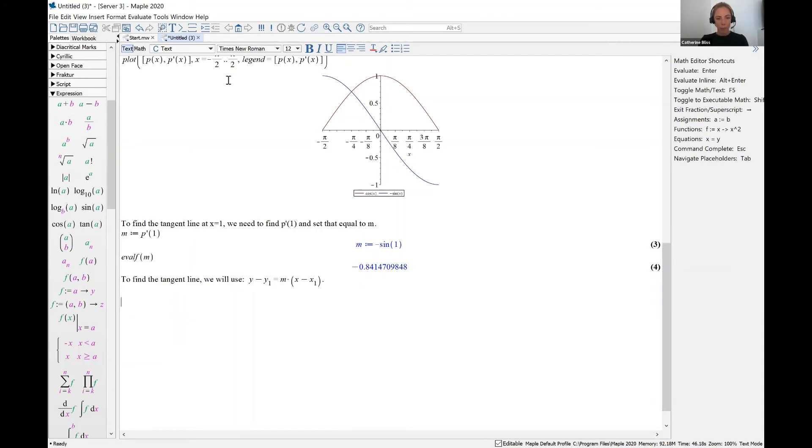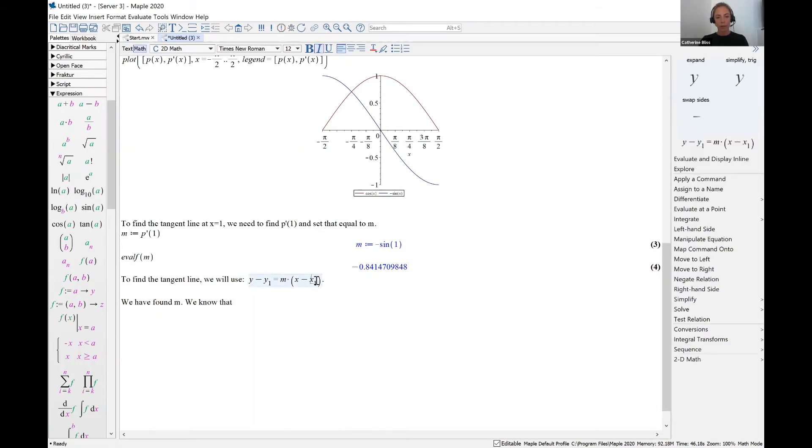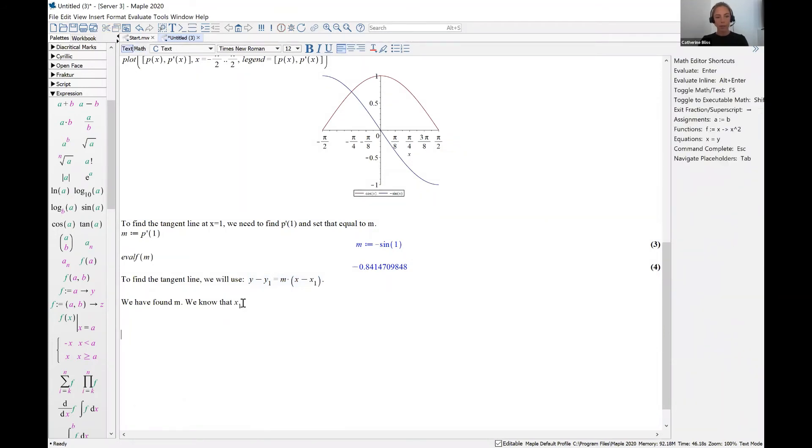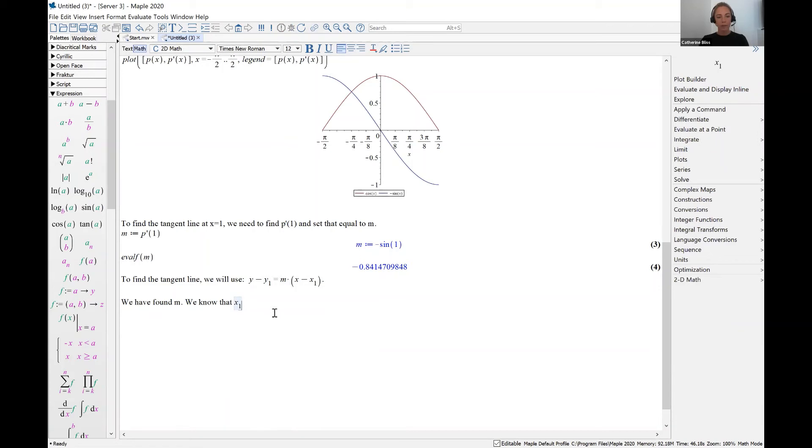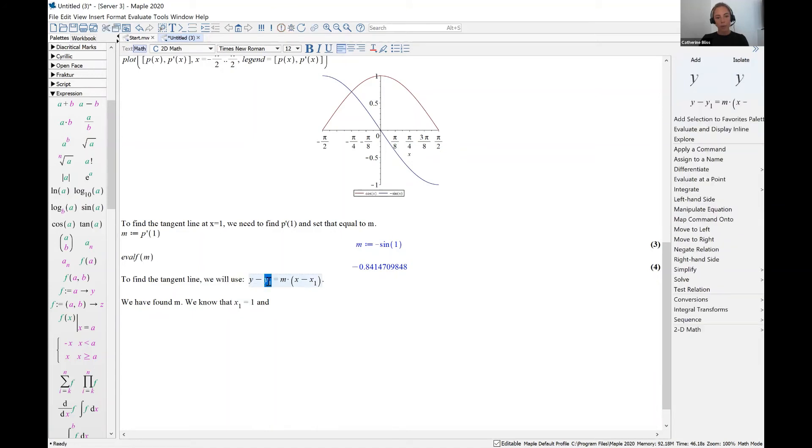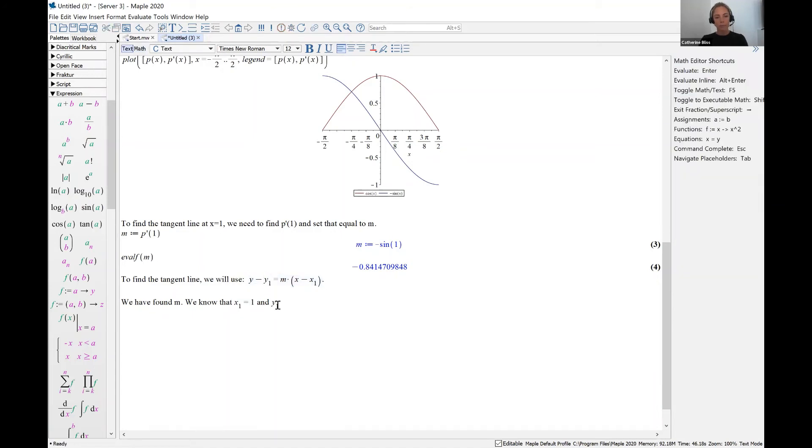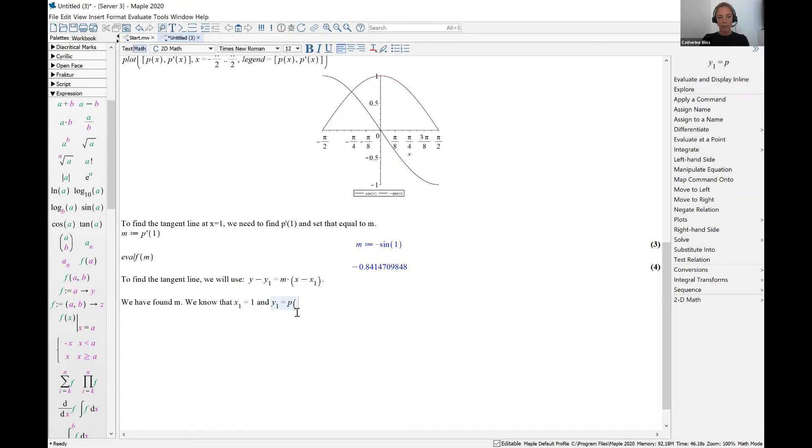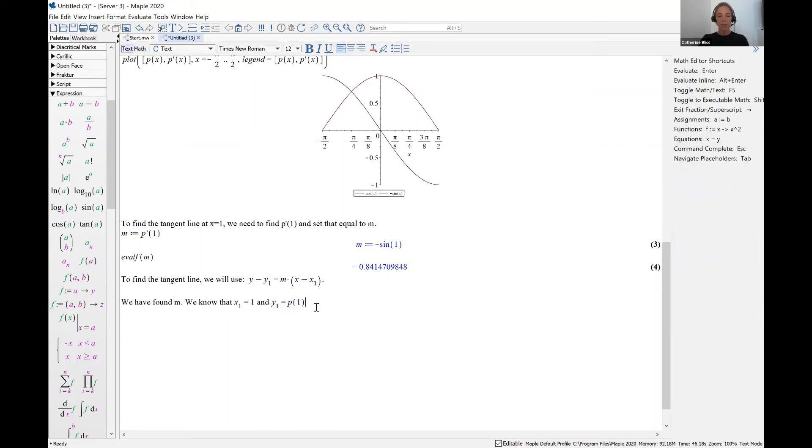Well, so far, we know what m is. For our point x sub one, y sub one, we know that x sub one, that's our point x equals one, that was something we were asked to do in the problem. And we know that y sub one, well, what is the y coordinate when x equals one, it's just our function evaluated at one. Okay, so we have all the pieces that we need, we now need to put it together.